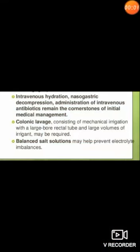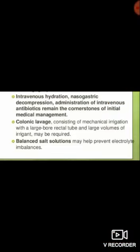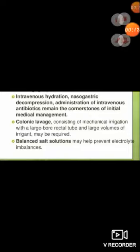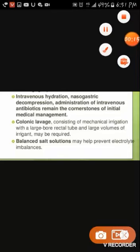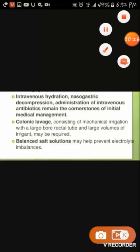Medical management of Hirschsprung's disease: The patient will be intravenously hydrated if dehydrated. Nasogastric decompression is performed to remove gastric contents. Intravenous antibiotics are administered. Colonic lavage is done — using a rectal tube to irrigate and clean the colon and rectal area. Finally, a balanced salt solution is provided to prevent electrolyte imbalance.